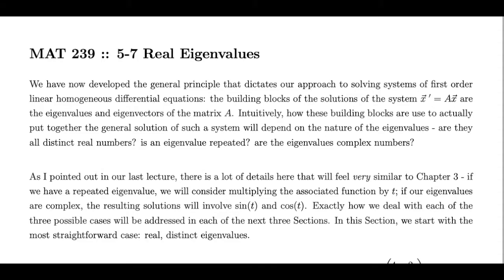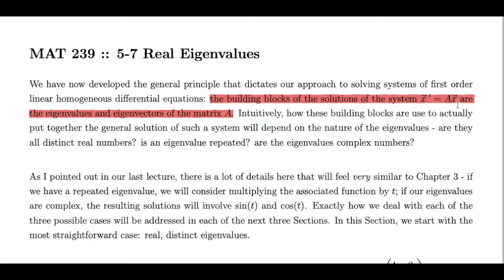Section 5.7. In the previous section, we developed what will be the key idea that drives our methodology in this chapter. That idea is, of course, that the building blocks of the solutions of the system x prime equals Ax, where x prime and x are vectors, are built out of eigenvalues and eigenvectors of the matrix A. That is the core idea that motivates and dictates all of the methodology we use in this chapter.